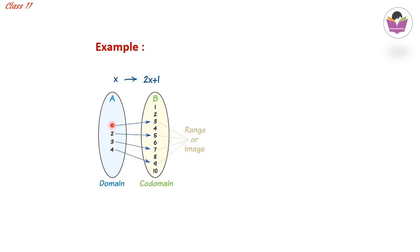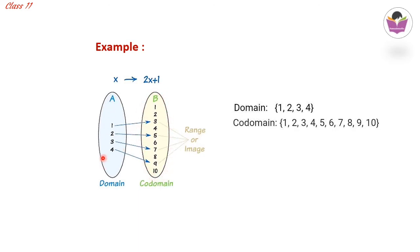The domain is the set of all first elements: {1, 2, 3, 4}. The codomain is the entire second set — {1, 2, 3, 4, 5, 6, 7, 8, 9, 10} — whether or not each element has a pre-image. The range includes only elements which have a pre-image in A — here {3, 5, 7, 9} — since only these have pre-images.